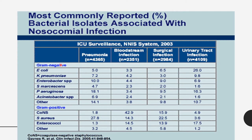The causative agents vary by infection type — pneumonia, bloodstream infection, surgical infection, and urinary tract infection. Gram-negative organisms responsible for nosocomial infections include E. coli, the main causative agent of urinary tract infections in both females and males. Gram-positive organisms include coagulase-negative Staphylococcus, Staphylococcus aureus, and Enterococci.